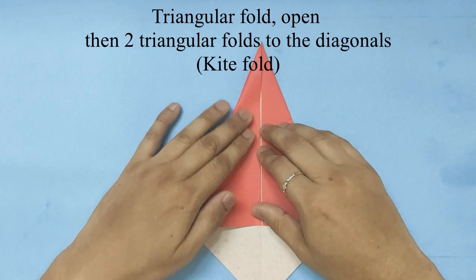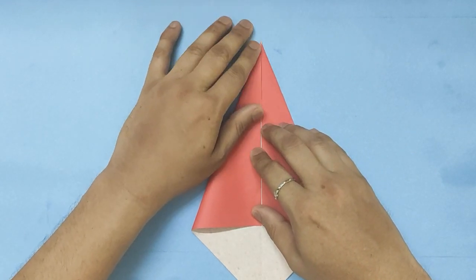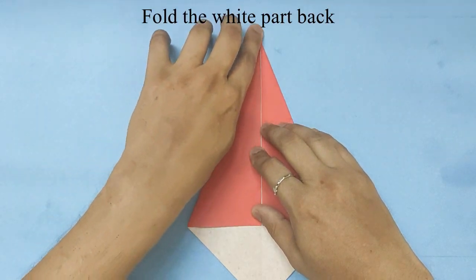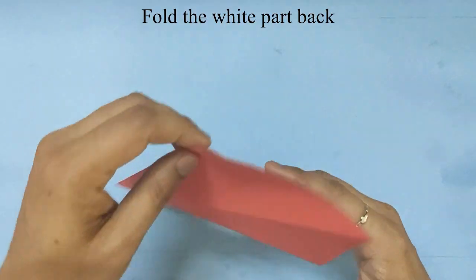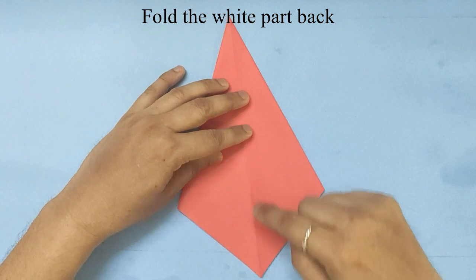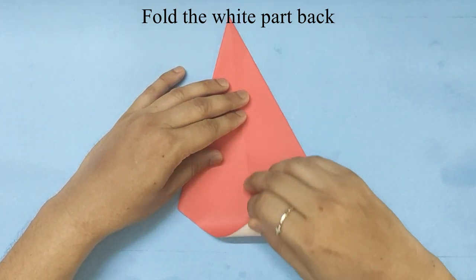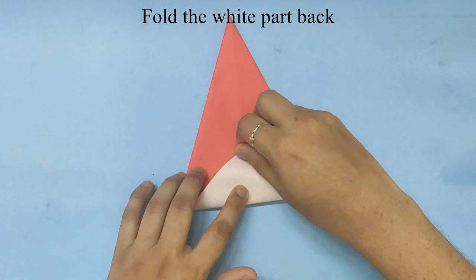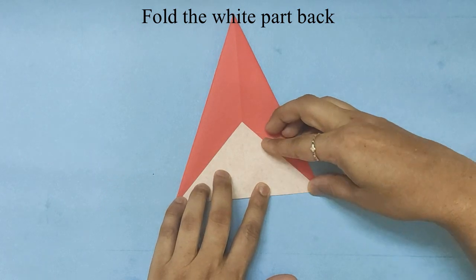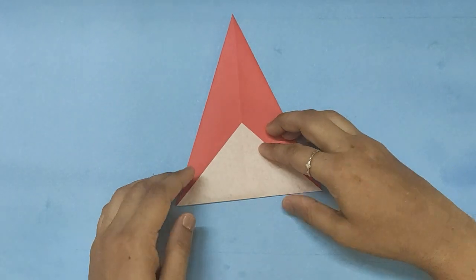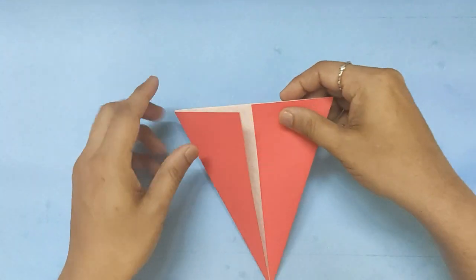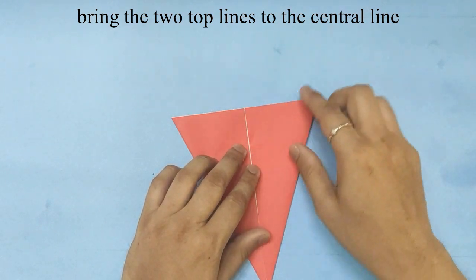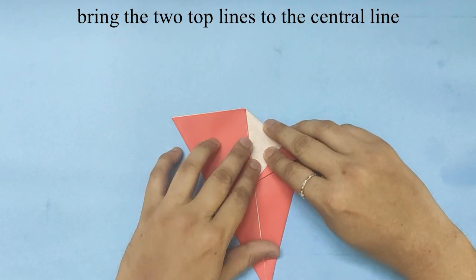You will fold the white part back along the diagonal. On the colored side, you will bring the top edge to the center line.